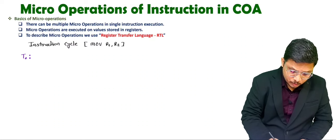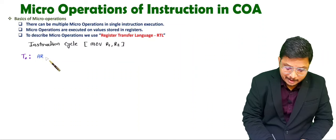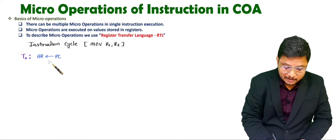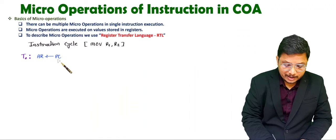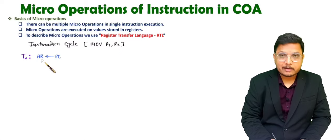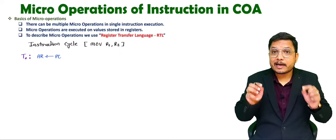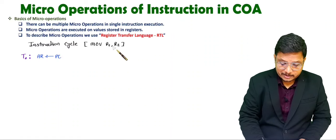So first of all, we will be transferring the data of the program counter inside the address register. That will be the first step. So what we'll be doing here is transferring the content of the program counter inside AR. This is what RTL language — we represent that by symbol. So AR now has the address of what? AR is having the address of the instruction.